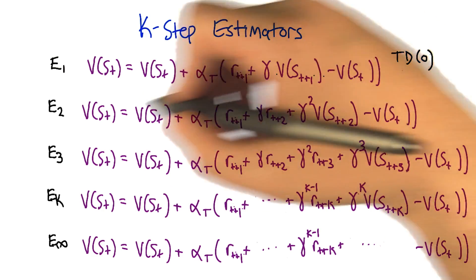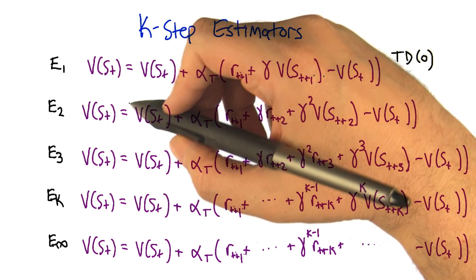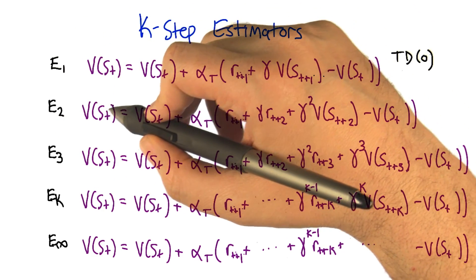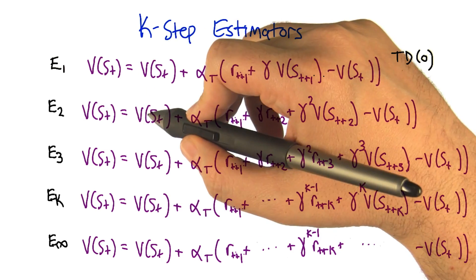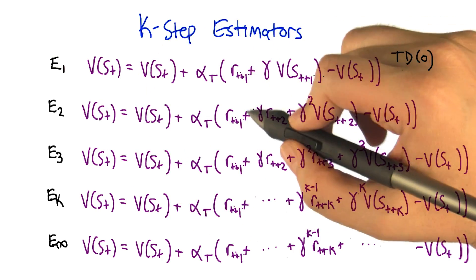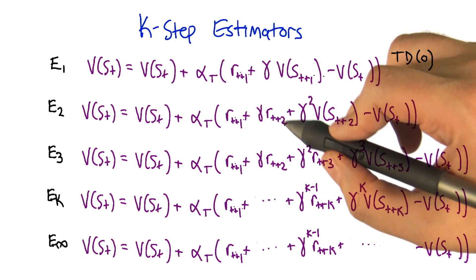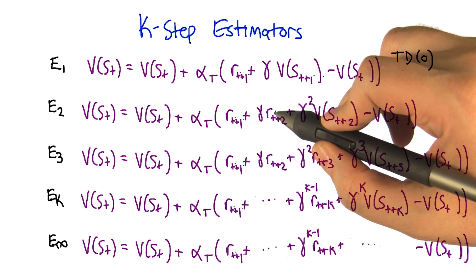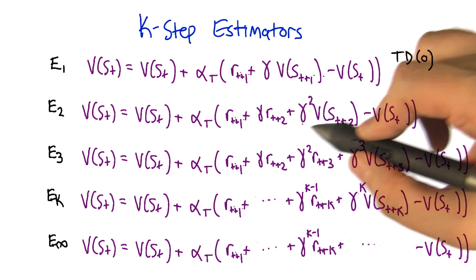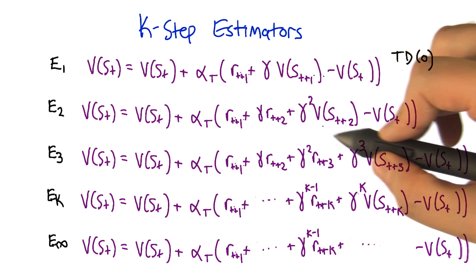But let's contrast that with a two step estimator. We'll call it E2, estimator two, where what we do is to estimate the value of a state that we're leaving. We're going to move a little bit in the direction of the immediate reward that we received, plus the discounted reward that we received next, plus the double discounted value of the state that we landed in two steps from now.